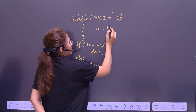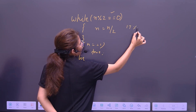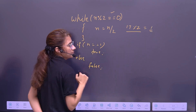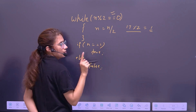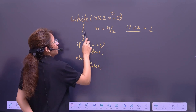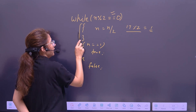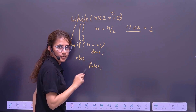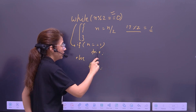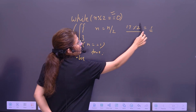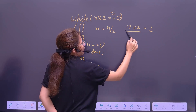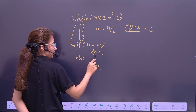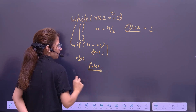In the case of 17: 17 mod 2 gives remainder 1. So the while condition is not true — we will not divide again. We check if n equals 1 — no, because n is still 17. So it will return false.